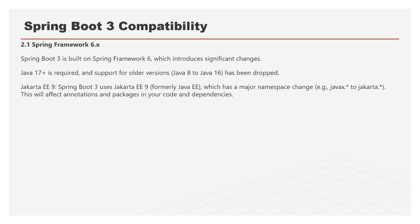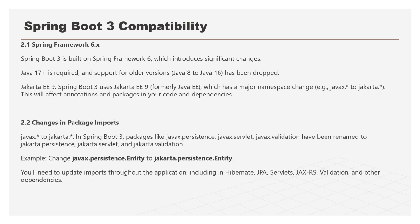There is a major Jakarta EE 9 package namespace change. Spring Boot now uses Jakarta, which was formerly known as Java EE. All packages previously starting with javax have been renamed to jakarta. This affects annotations, packages, dependencies, and your code everywhere. For example, javax.persistence becomes jakarta.persistence, javax.servlet becomes jakarta.servlet, and so on — you need to update all these imports throughout your application.